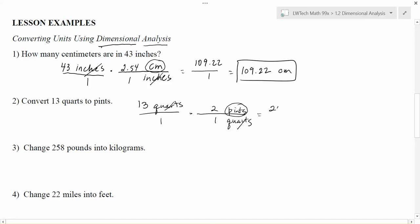Now notice that the quarts units cancel. I'm left with pints remaining behind. And now I just solve. 13 times 2 on the top gives me 26. 1 times 1 on the bottom gives me 1. I divide and that gives me 26. And the units that were left after dividing out any common terms was pints. So 13 quarts and 26 pints are the same.